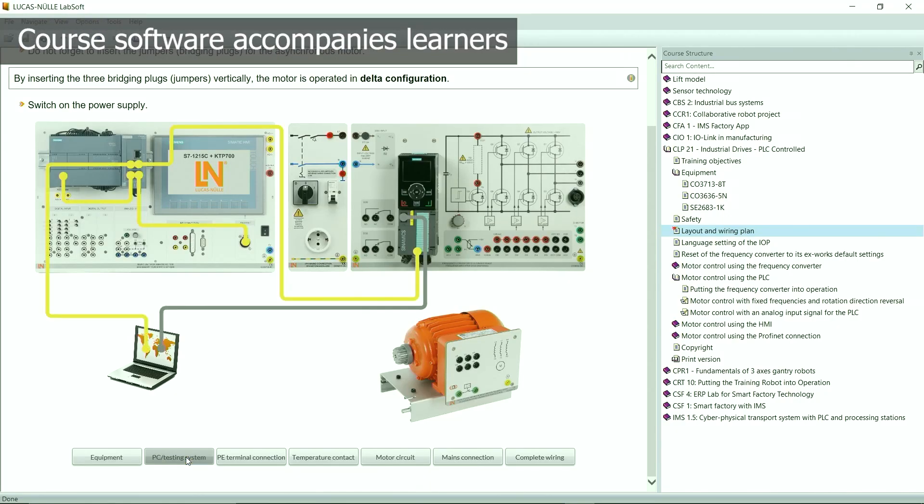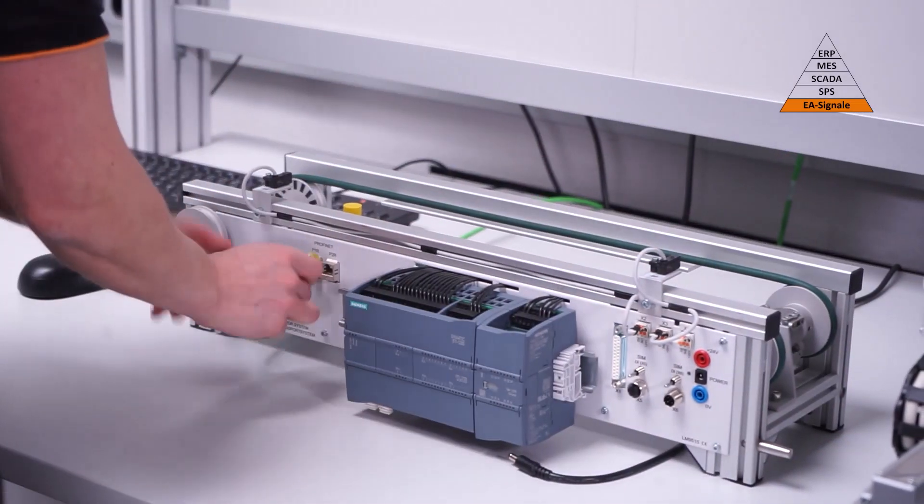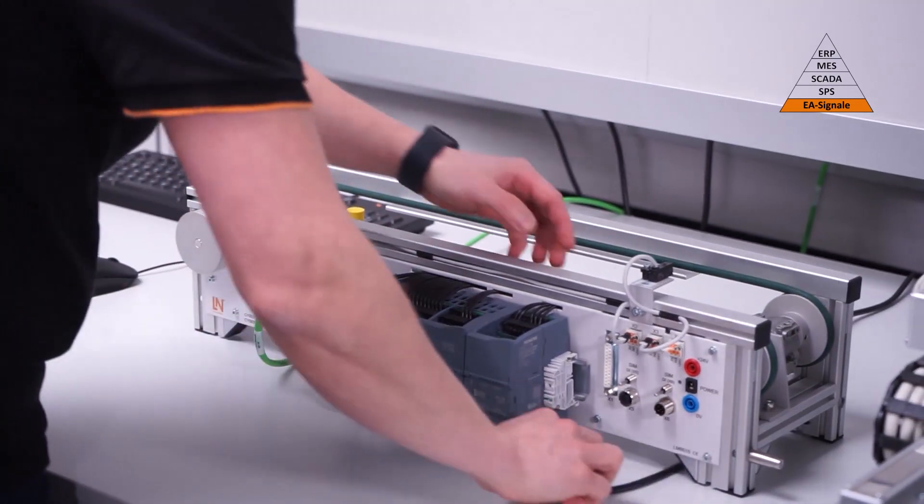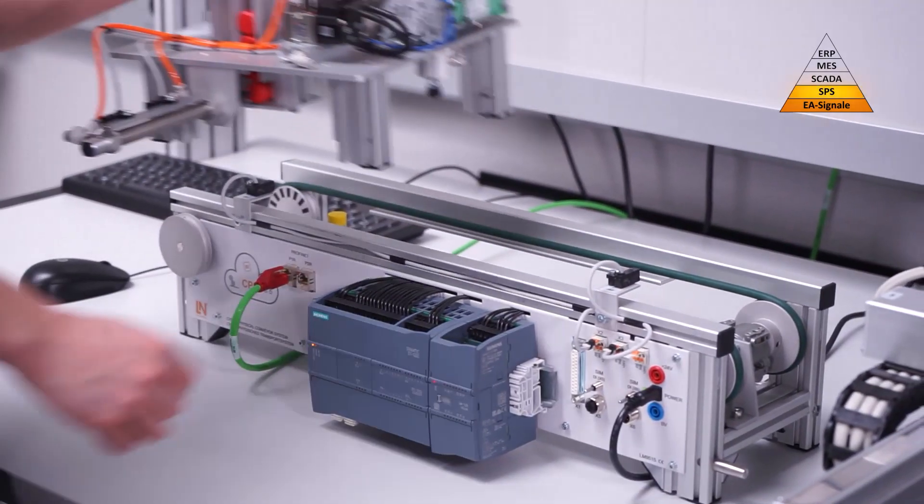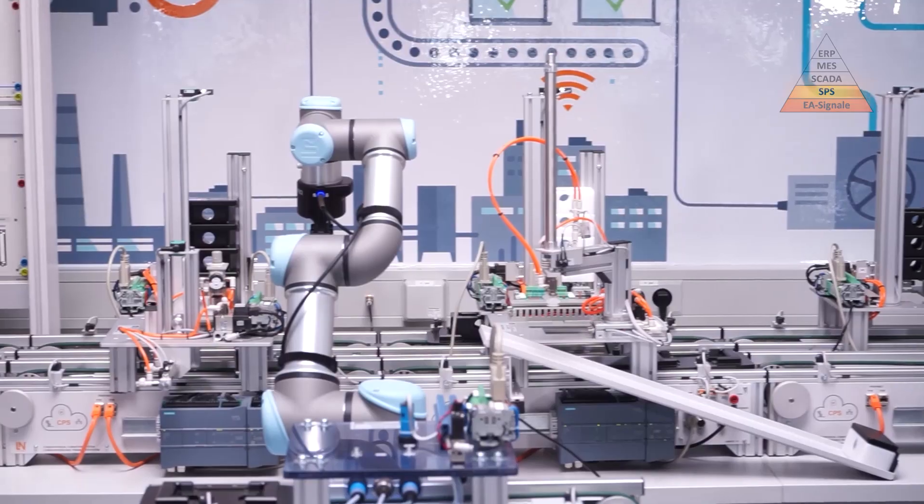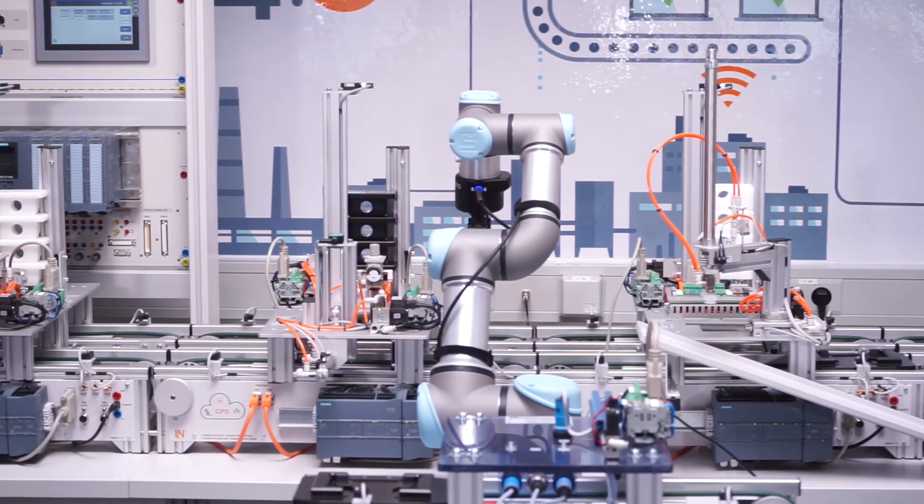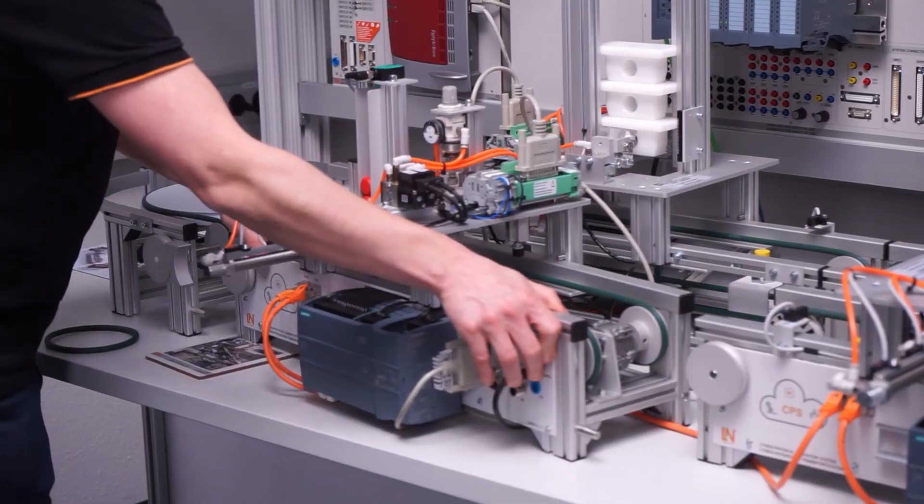The trainee is supported here by the LucasNula course software which contains explanations and projects. Use the skills you have acquired to operate conveyor belts with AC motors and expand it with other bigger systems all the way to a fully-fledged industry 4.0 smart factory system.